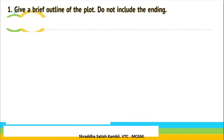We do not want the reader to understand everything about the book from your review and decide, 'Oh now I know what the book is about, so I do not want to read it.' Just give a brief outline of the plot. This is a very important point — do not include the ending. That is the climax, what happens in the end. That is the curiosity factor which keeps the reader glued to the book, engrossed in the book. If you tell them what will happen in the end, nobody will want to read the book — the mystery is lost. So do not include the ending, whether it is for a book, a novel, or a movie. Do not reveal what will happen in the end.